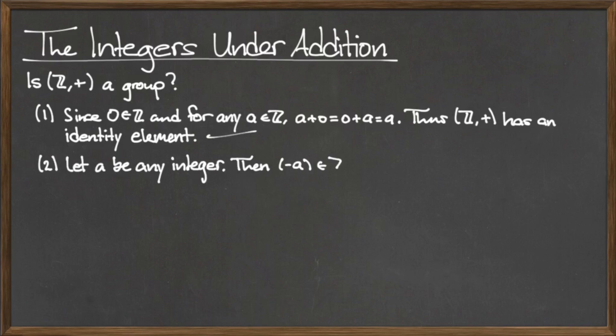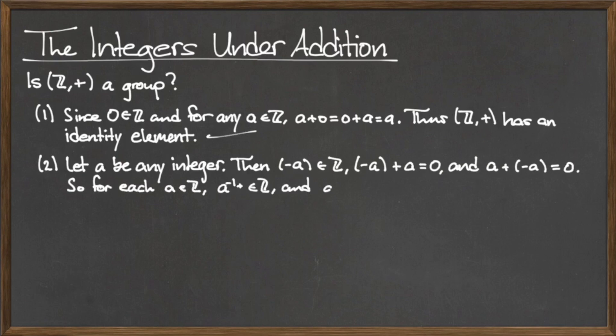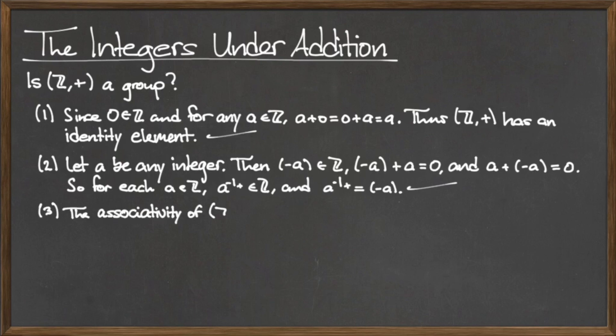Next, let a be any integer. Then its negative counterpart, negative a, is also an integer, such that negative a plus a equals a plus negative a, which is equal to 0. So for any integer a, negative a is its additive inverse, so every integer has an inverse, so this requirement is satisfied. Finally, we have stated previously that addition of integers is associative, so the associativity requirement is satisfied.